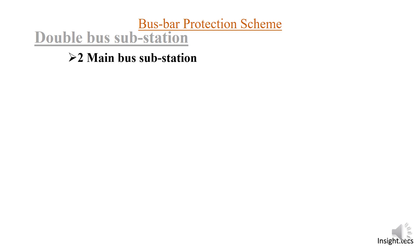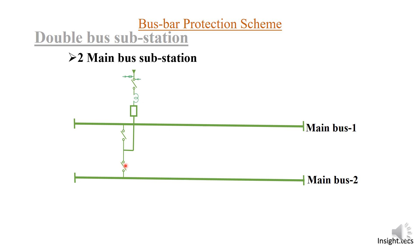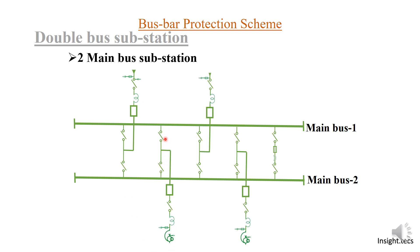Now for the double bus substation, we are discussing two main buses — bus one and bus two. The arrangement is different: for each feeder bay, there will be more isolators. You will see a selection isolator provided to select bus one or bus two. Similarly for a transformer bay, it will have two isolators for selecting bus one or bus two. There are many combinations that can be done using these isolators — they can select either bus, be connected to both buses, or use a bus coupler.